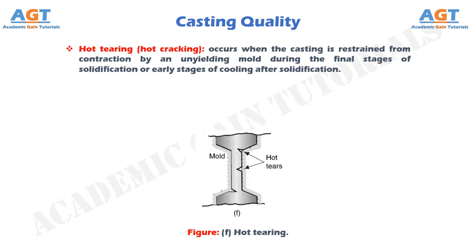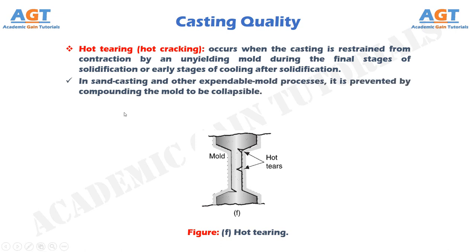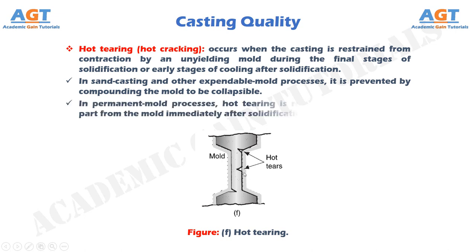Hot tearing, also called hot cracking, occurs when the casting is restrained from contraction by an unyielding mold during the final stages of solidification or early stages of cooling after solidification. In sand casting and other expendable mold processes, it is prevented by compounding the mold to be collapsible. In permanent mold processes, hot tearing is reduced by removing the part from the mold immediately after solidification.